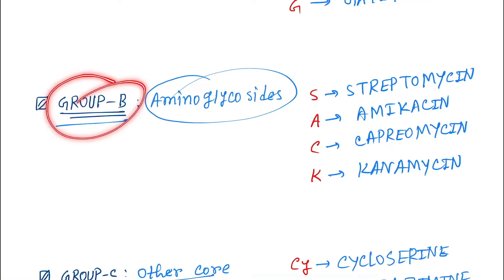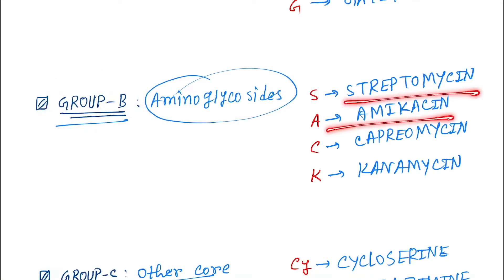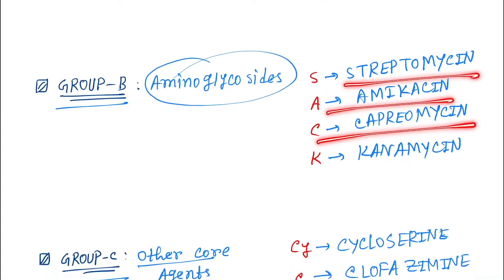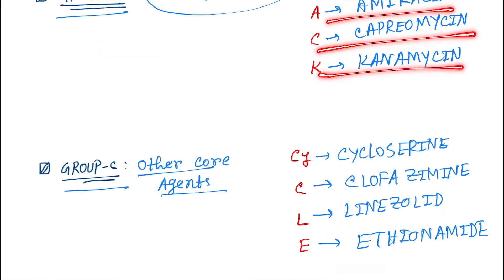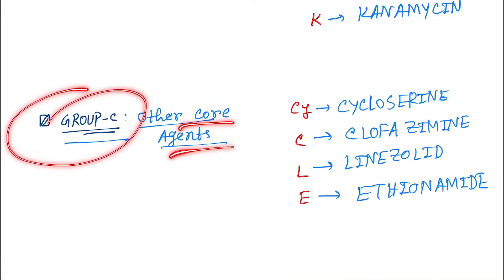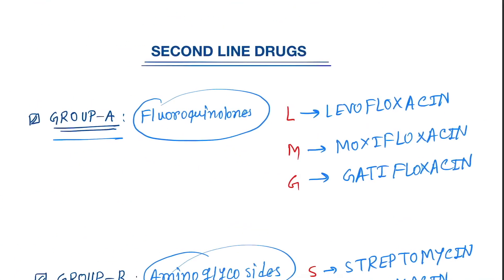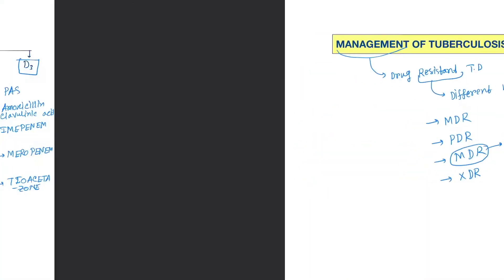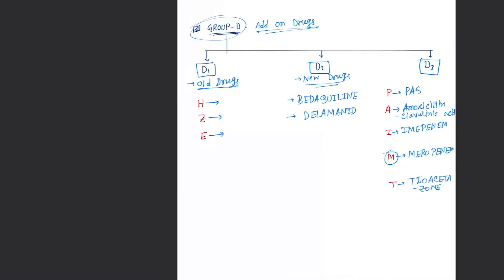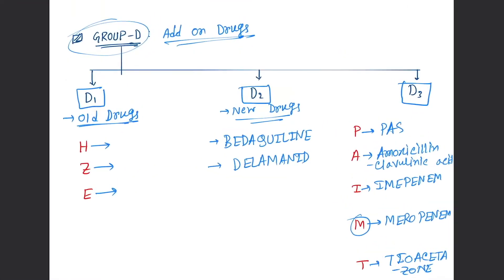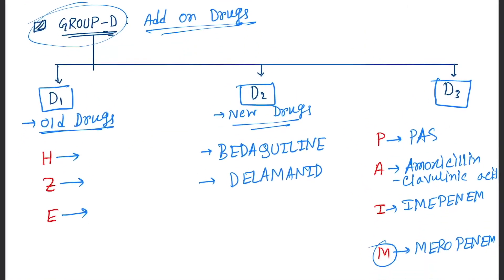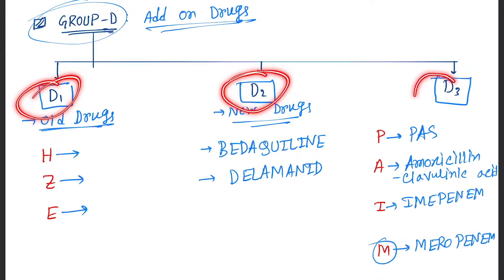Group B is aminoglycosides: streptomycin, amikacin, capreomycin, and kanamycin. Group C is other core agents: cycloserine, clofazimine, linezolid, and ethionamide. Group D is add-on drugs, subclassified into D1, D2, and D3.